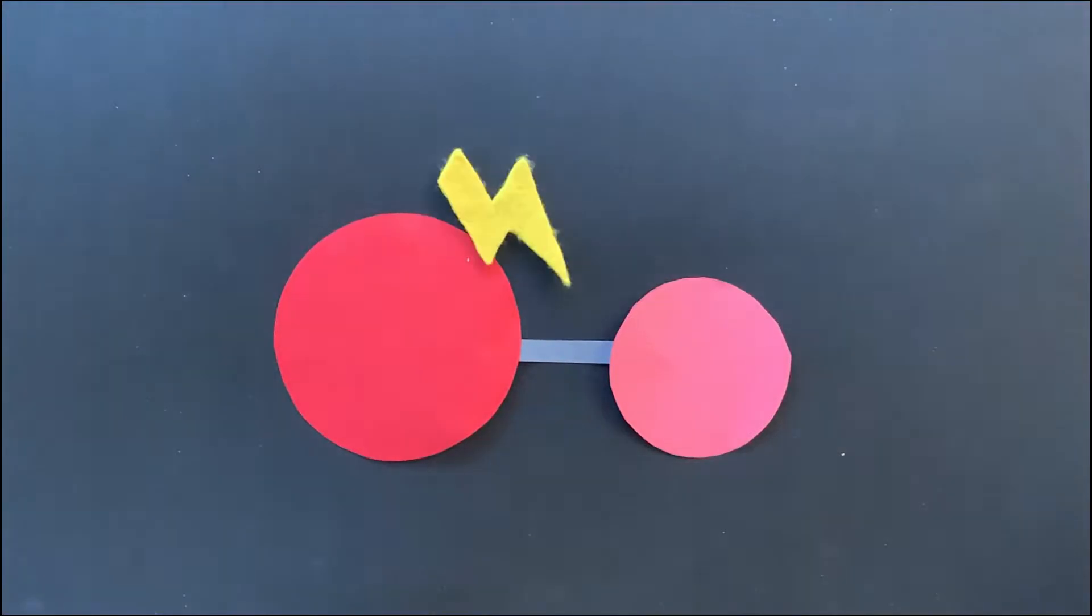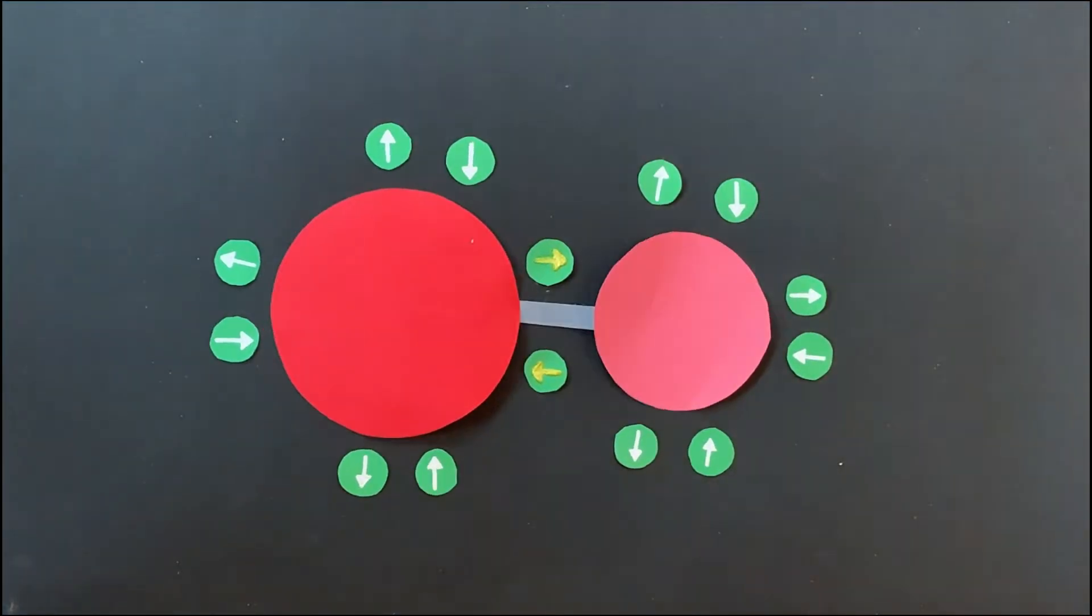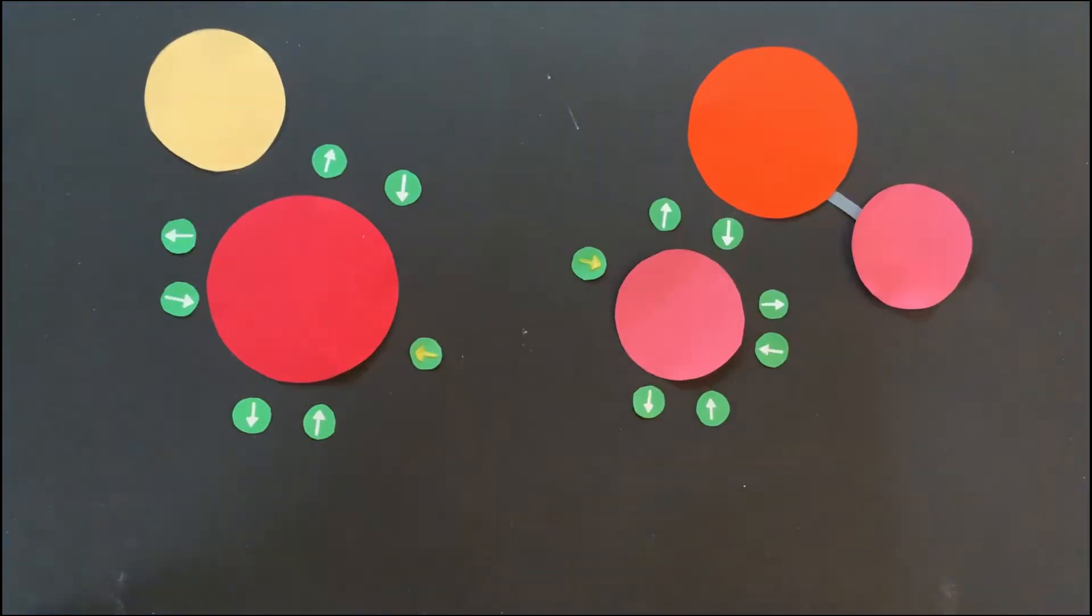When energy hits a molecule, it breaks and sometimes forms a radical pair, which is a tiny bit magnetic. Radical pairs don't last long. They either recombine or create a new molecule.